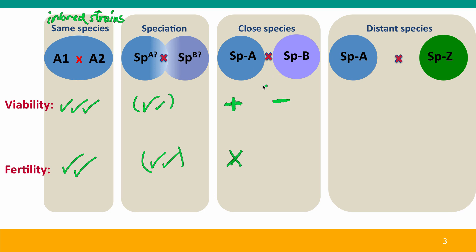Fertility is very rare in hybrids between members of different species. And between distant species, typically there's no viability. Rarely there may be fertilization, but developmental incompatibilities are usually strong enough that the embryo will simply abort, and of course then there's no issue of fertility.